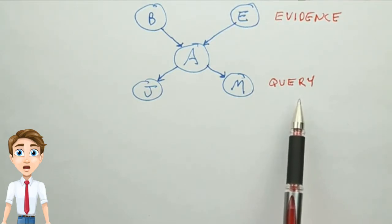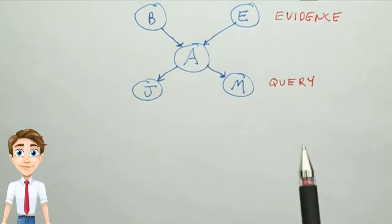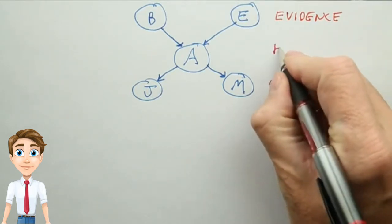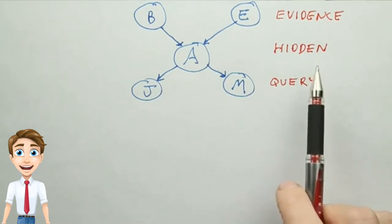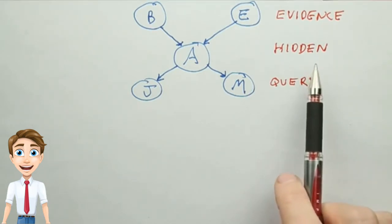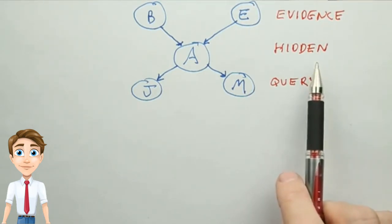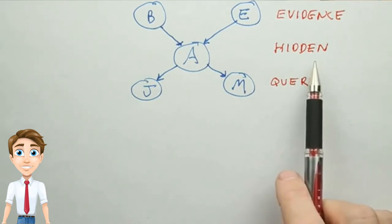Anything that is neither evidence nor query is known as a hidden variable. That is, we won't tell you what its value is, we won't figure out what its value is and report it, but we'll have to compute with it internally.